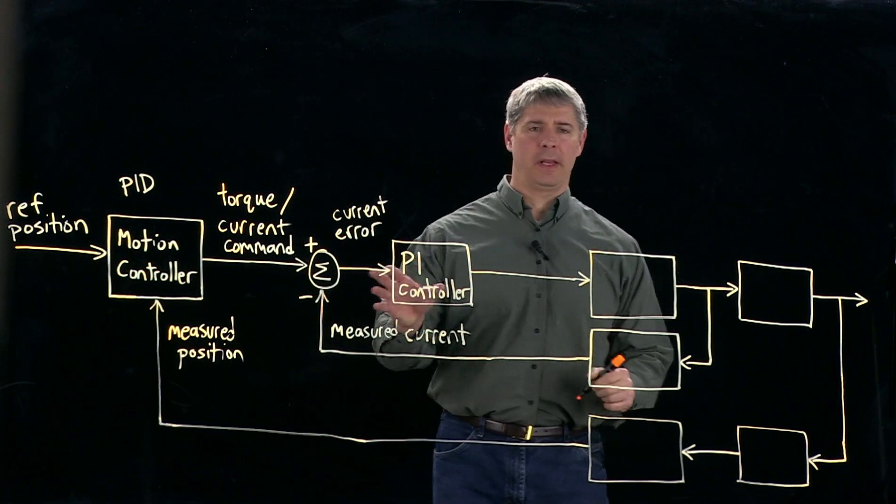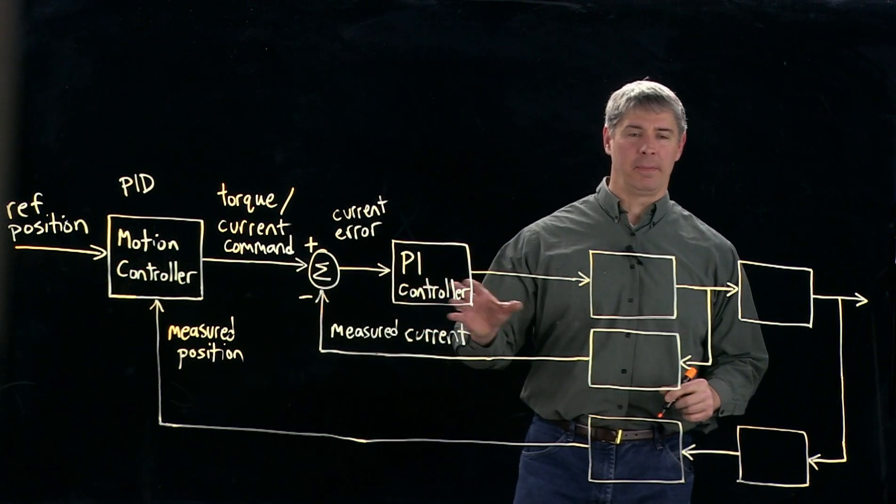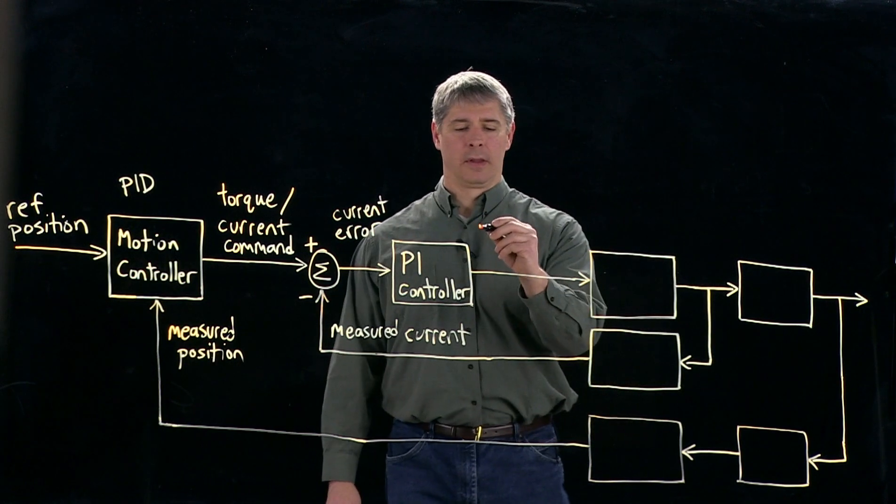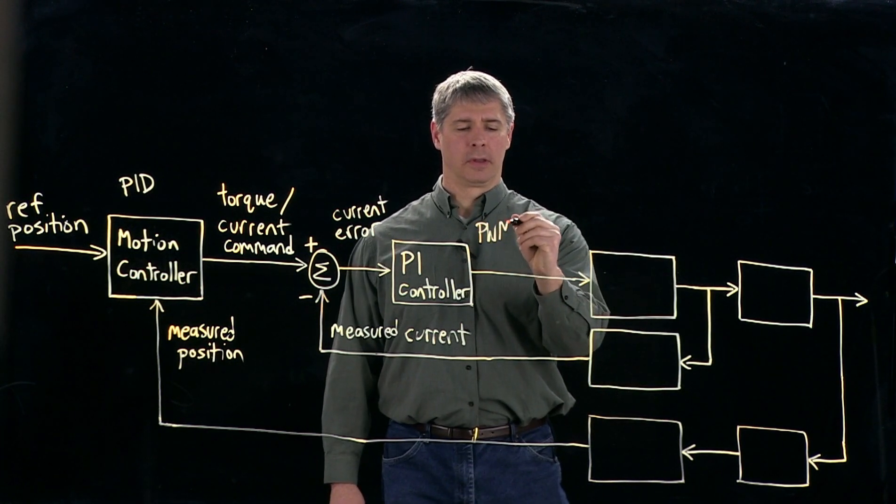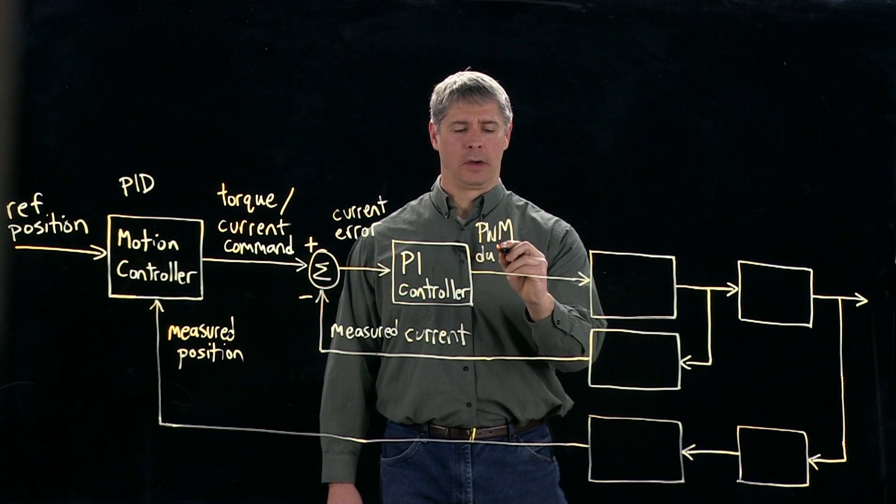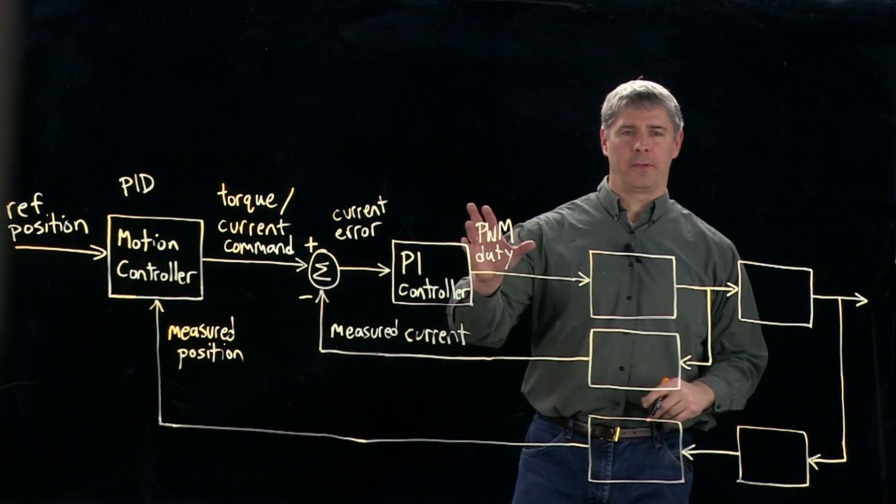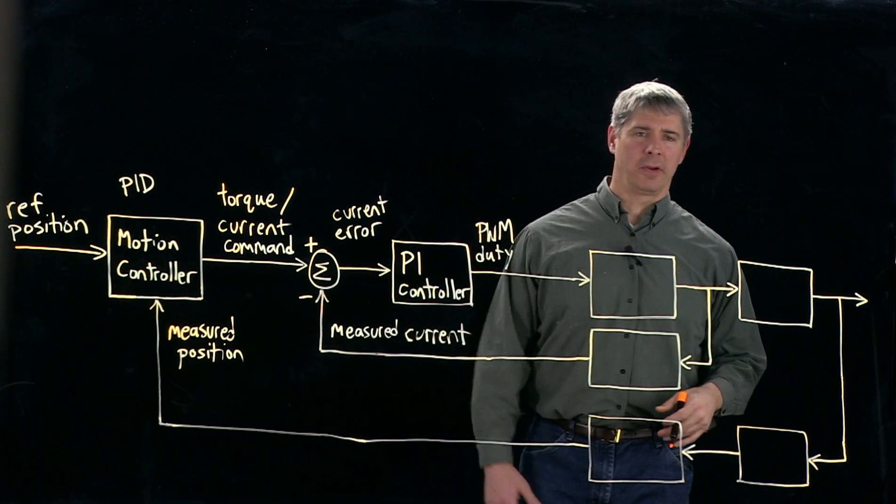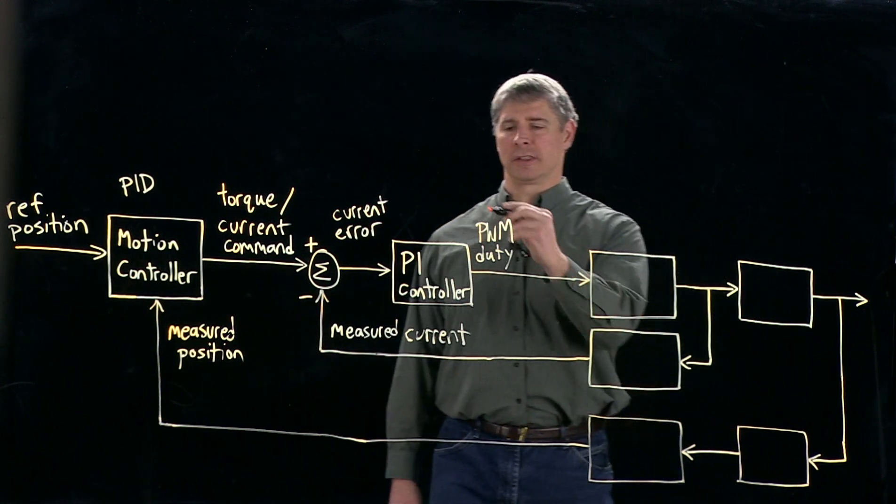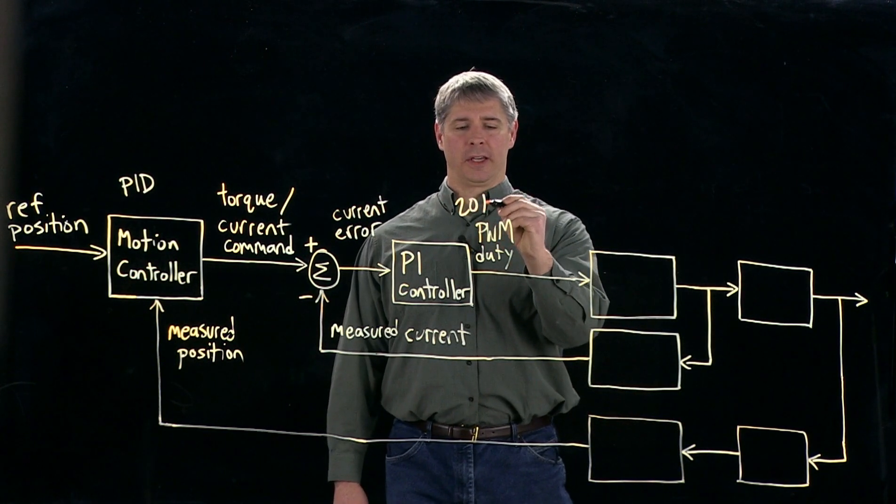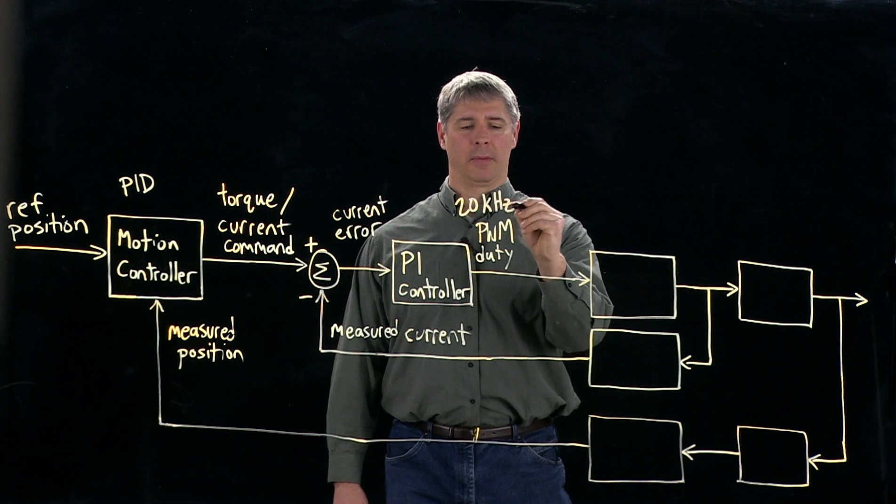And the output of the PI controller is going to be a PWM duty cycle. And the PWM for controlling motors is typically in the range of 10 to 40 kilohertz. Let's say that it's a 20 kilohertz PWM coming out.